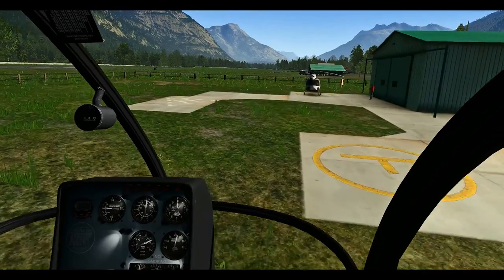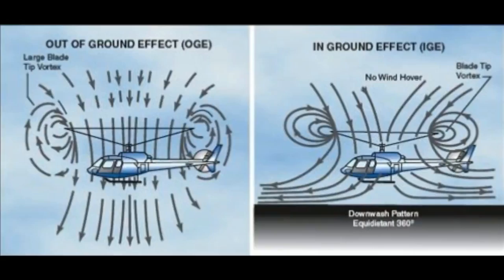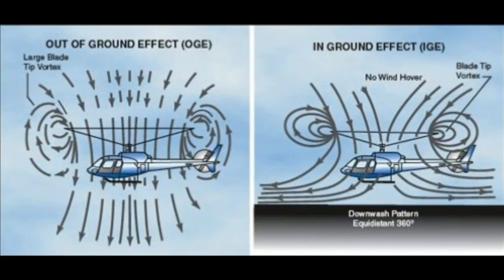So ground effect — I'll put a picture up on the screen here that will demonstrate it quite nicely. If you're hovering near the ground, air is going to be pushed down and off the ground, pushed to the sides away from the centre of the helicopter. That means the vortexes that get created at your rotor tips as the rotors spin are going to be smaller when you're hovering in ground effect because they get pushed away by the air.